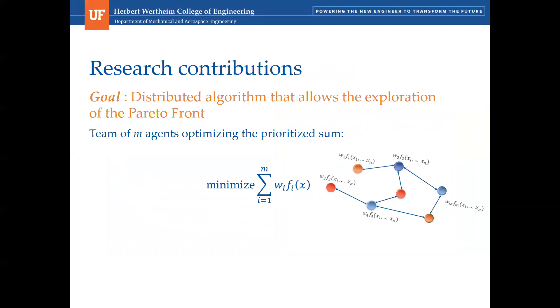Here's the problem that is solved, which is minimizing the prioritized sum of objective functions. Each agent has one objective function to minimize. Initially, each agent starts with an initial decision vector and its initial priority vector. Each agent assigns priorities to all the agents in the network, even if they don't communicate with them. Each agent priority vector has to sum to one.